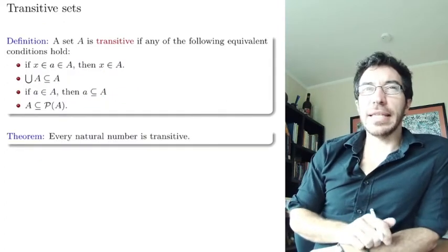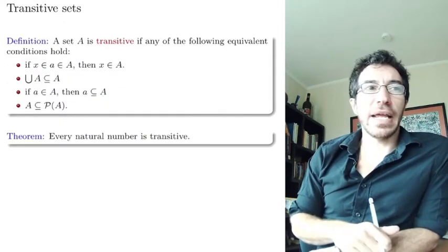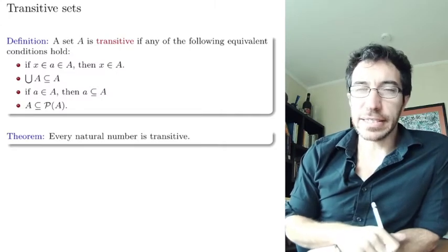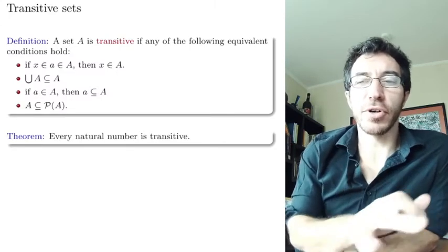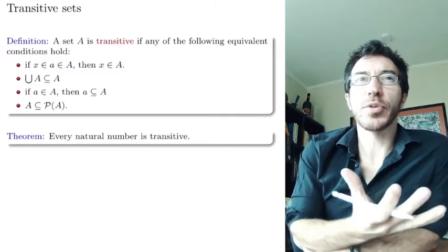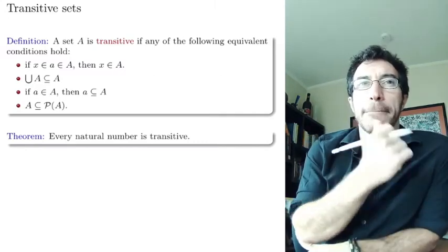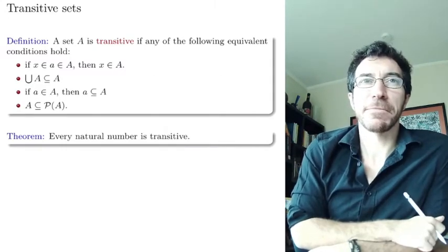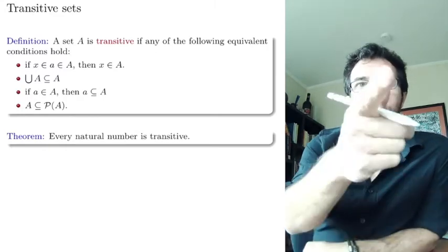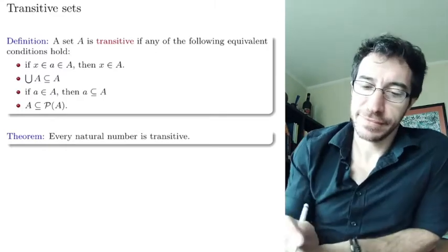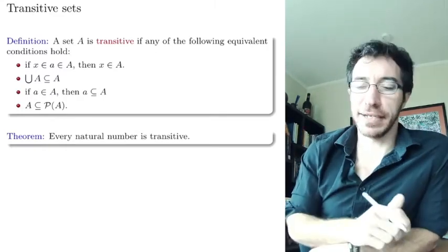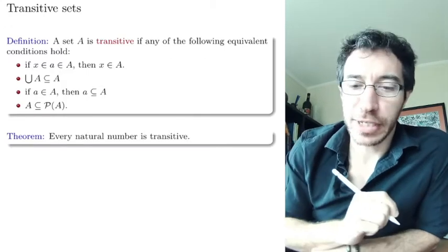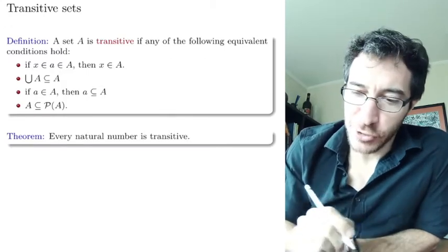So that's the notion of a transitive set. Now we can prove that every natural number is transitive. How do we prove it? By induction.